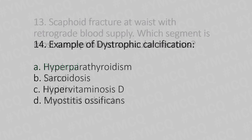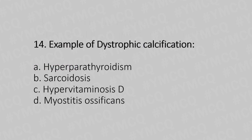Fourteenth question: Example of dystrophic calcification — Option A: hyperparathyroidism. Option B: sarcoid disease. Option C: hypervitaminosis D. Option D: myositis ossificans. The answer is Option D, myositis ossificans.